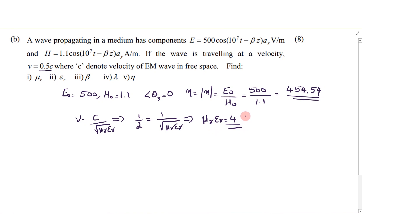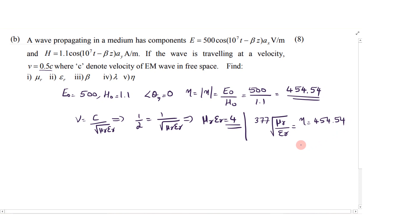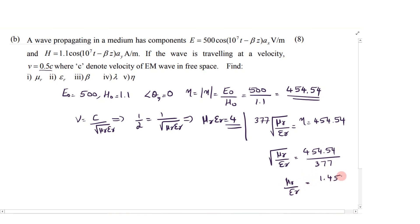We have two variables, so we need one more equation. Using the value of eta: eta0 is 377 ohm or 120 pi. So eta0 times square root of mu r over epsilon r equals eta, which is 454.54. This gives square root of mu r over epsilon r equals 454.54 divided by 377. From this, mu r over epsilon r equals 1.453. This is the second equation.